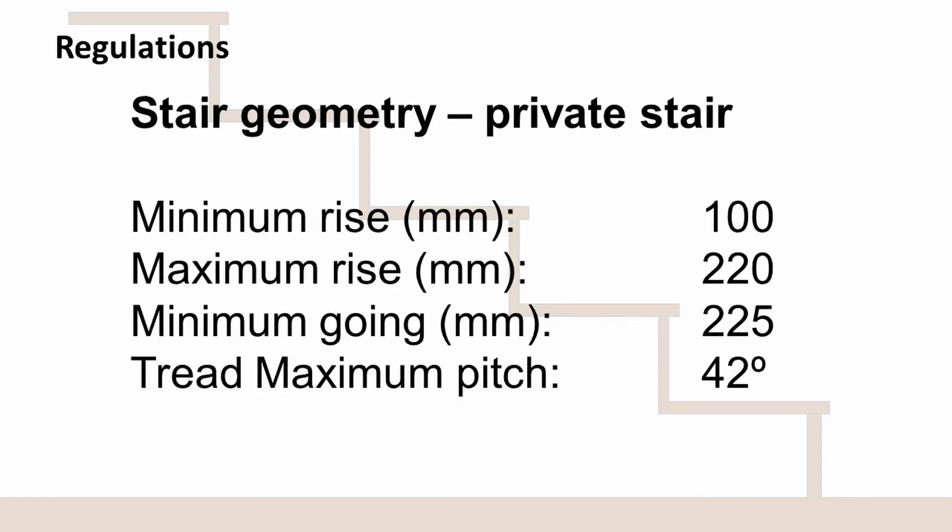In the Scottish Building Regulations, we have a number of minimums and maximums to deal with. There's a minimum rise of 100mm. The maximum, which is probably more pertinent, is 220mm. We have a minimum going of 225mm, and there is no maximum — although in practice, very long treads tend to be quite difficult to navigate.